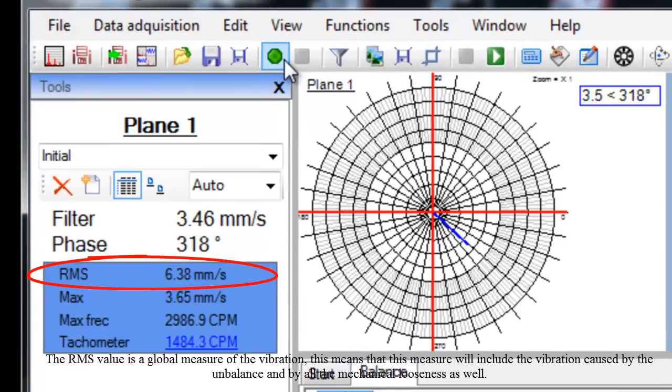The RMS value is a global measure of the vibration. This means that this measure will include the vibration caused by the unbalance and by all the mechanical looseness as well.